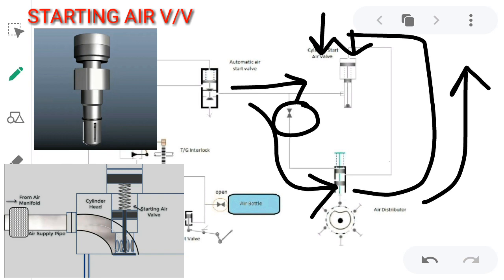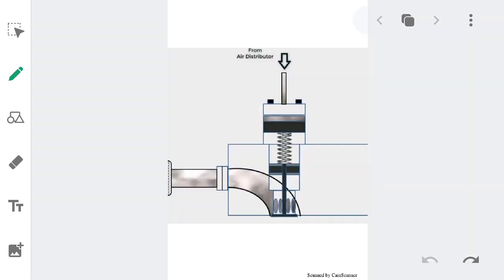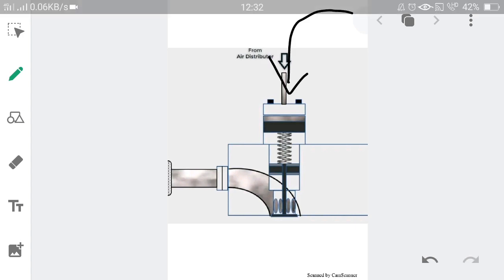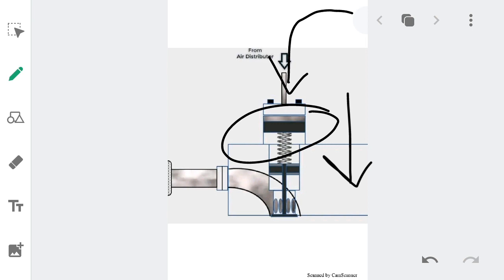As soon as the cylinder start air valve gets 30-bar pressure on top of it from the air distributor, it will open, and the 30-bar pressure will enter the cylinder. This is shown in the detailed drawing. The 30-bar pressure air from the distributor comes to this particular point and pushes the piston downwards. As this 30-bar pressure from the air distributor pushes the piston downwards, overcoming the spring tension, the start air valve opens and the 30-bar pressure from the automatic start air valve gets inside the cylinder.